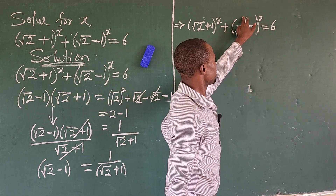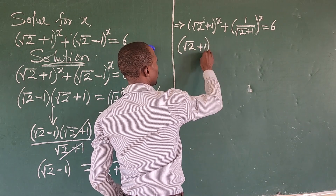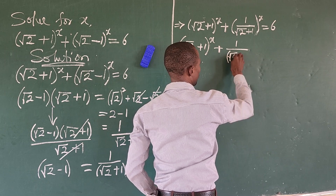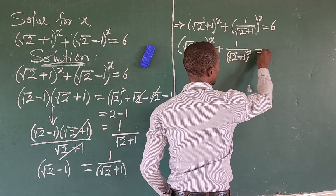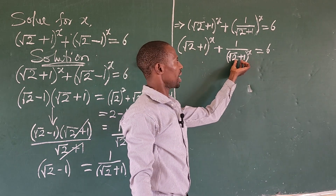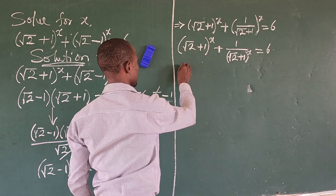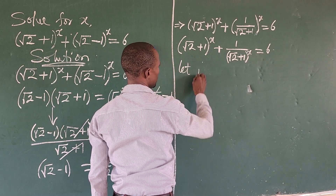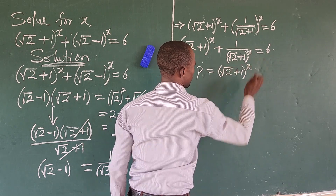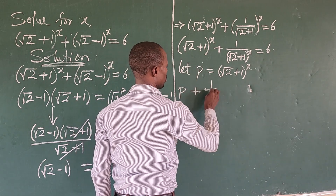We can separate the exponents, giving us: (√2 + 1)^x plus 1/(√2 + 1)^x equals 6. We have succeeded in making the base inside both terms the same. At this point we can bring in another alphabet — let p = (√2 + 1)^x — so wherever we see this expression, we put p.